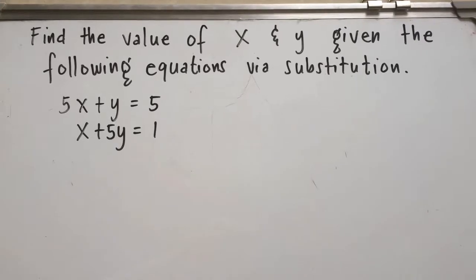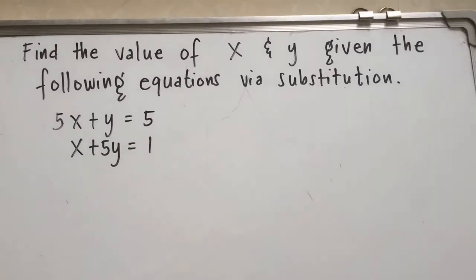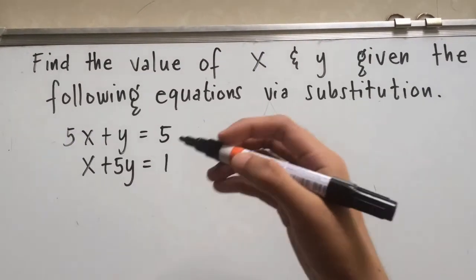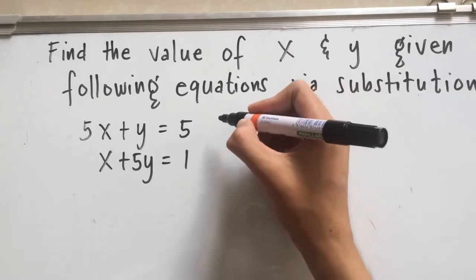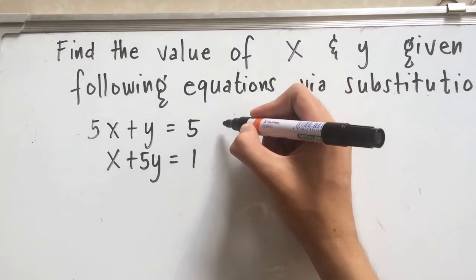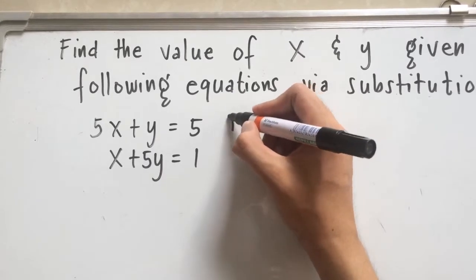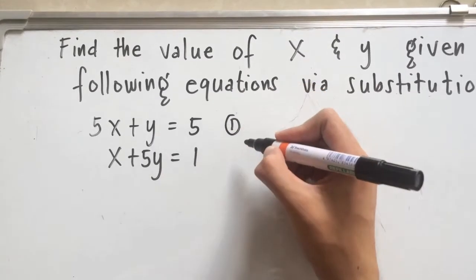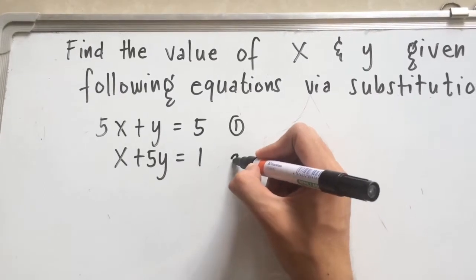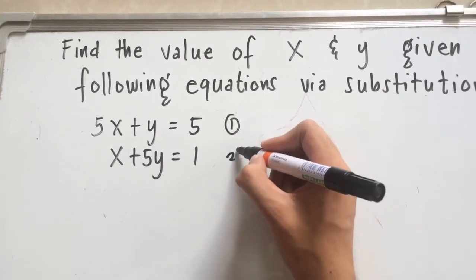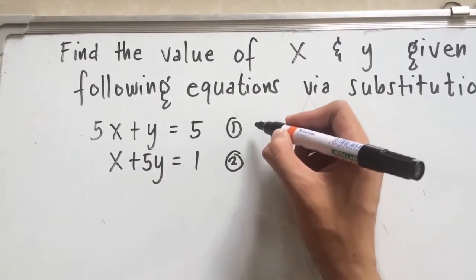Hi everyone, welcome to my channel, this is Arnel again. Today we are going to find the value of x and y of the given linear equations. The first equation is 5x plus y is equal to 5, and we are going to find the values of x and y using the substitution method. The second equation is x plus 5y is equal to 1.